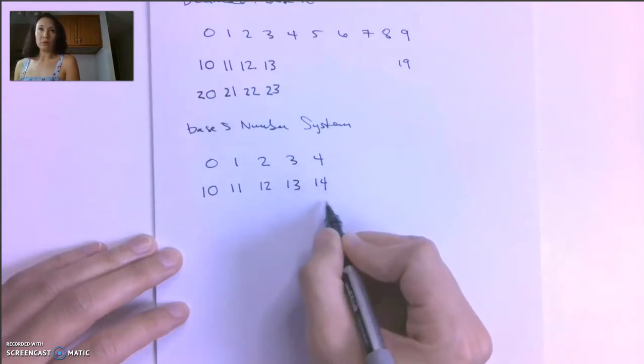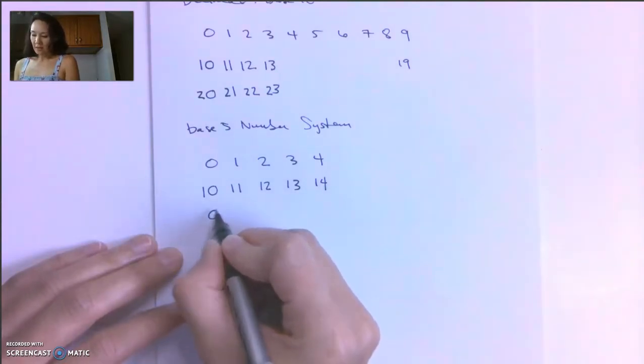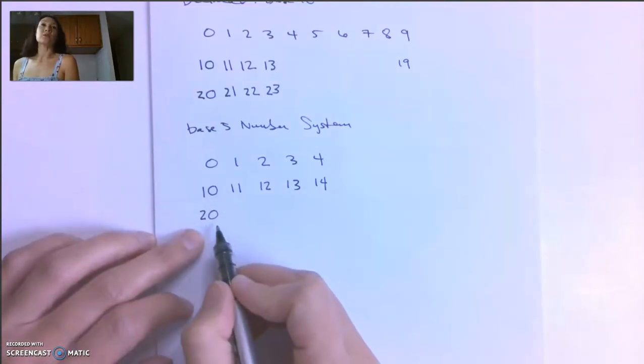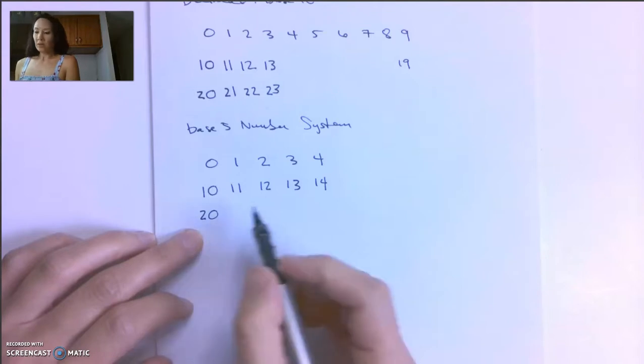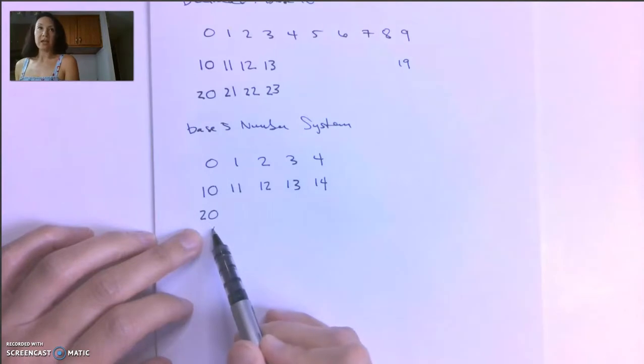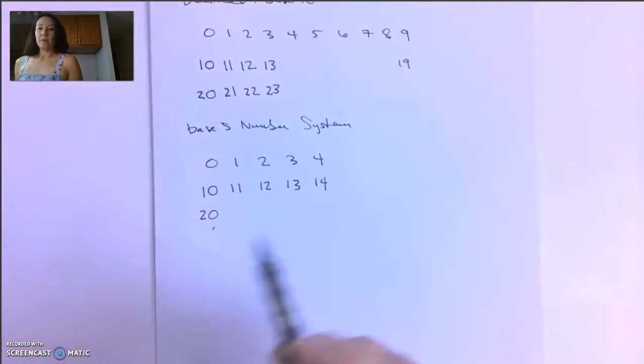To represent 10 in a base 5 number system, since we're out of numerals, we start over again, and then we iterate what's in the tens digit. So it looks like decimal 20 is actually in base 5, the number 4, 5, 6, 7, 8, 9, 10. And this is a base 5 number system.